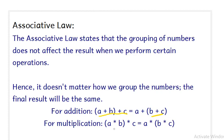Similarly for multiplication, if we have numbers A, B and C, if we multiply A and B first and then the product is multiplied by C, and if we do multiplication of B with C and the product with A, we will get the same result. So this is what the associative law says — whether we group this way or that way, we will get the same thing.